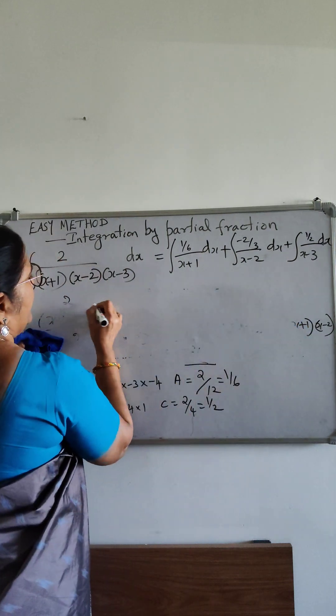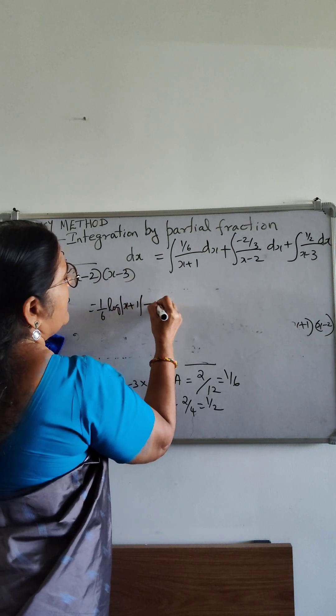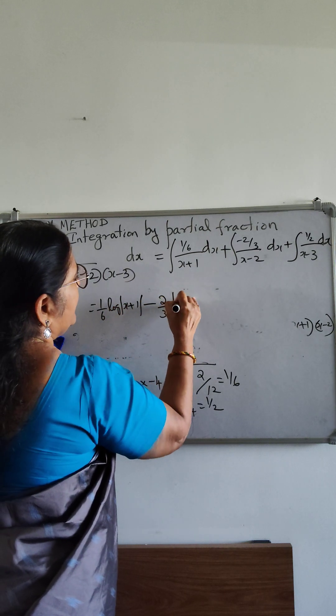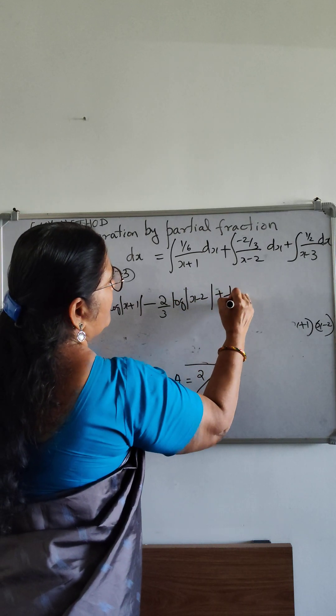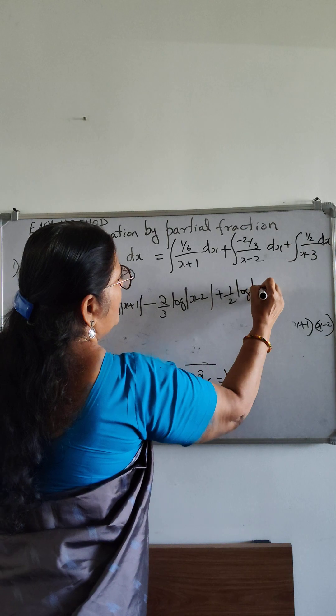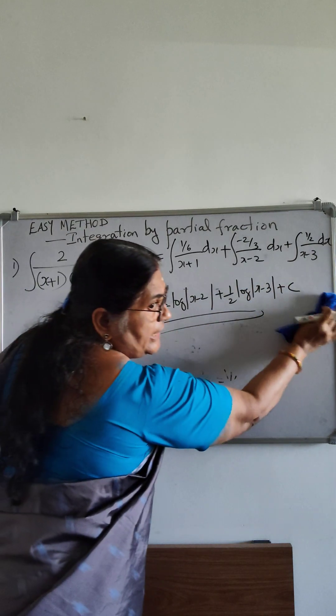Integrating we get 1 by 6 log mod x plus 1 minus 2 by 3 log mod x minus 2 plus 1 by 2 log mod x minus 3 plus c. Okay, thank you.